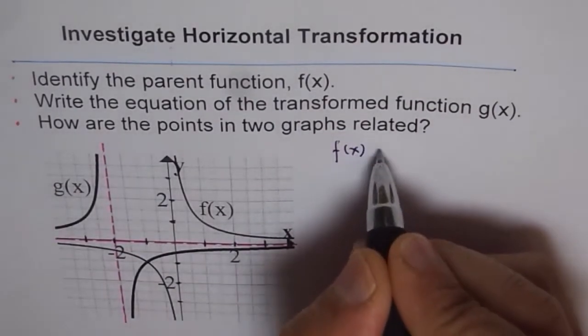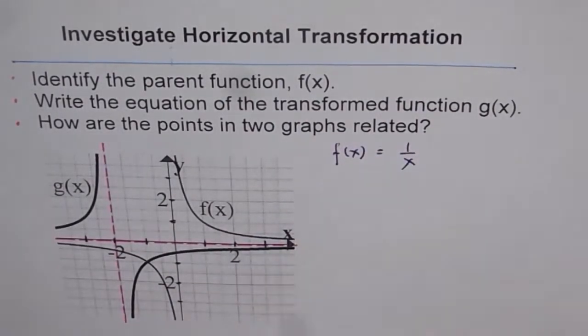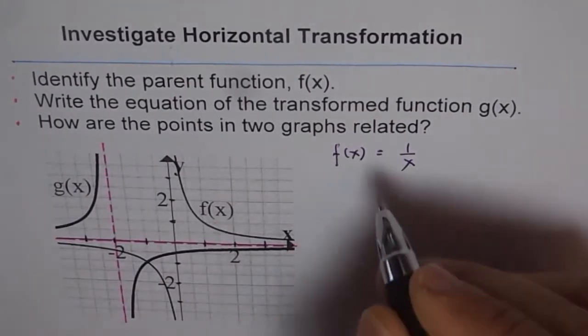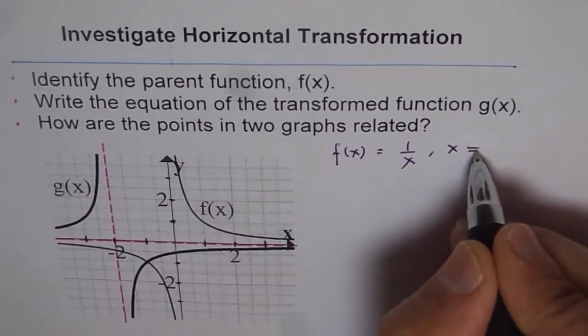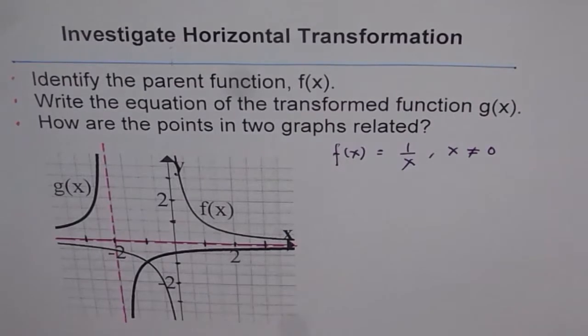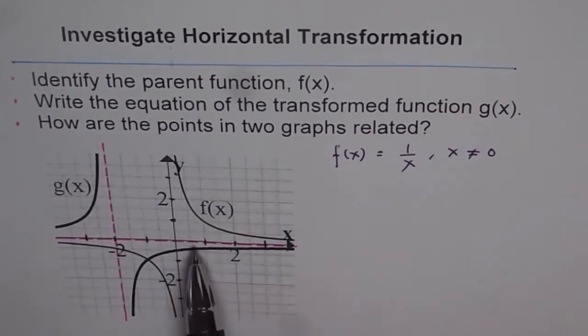So f(x) is 1 over x, and here x cannot be equal to 0, so x is all real numbers but it is not equal to 0.